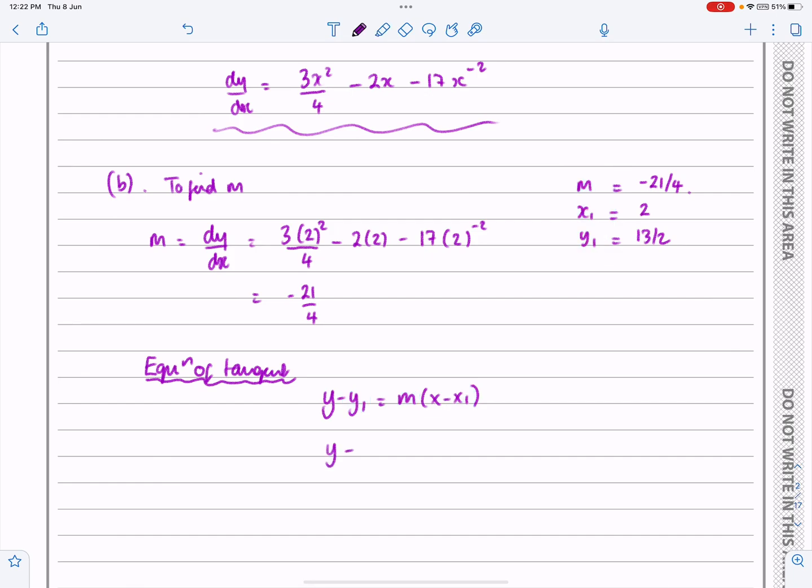So I'm going to get y - 13/2 is equal to m, which is -21/4, times (x - 2). Really useful to have it written down over there. It means you're less likely to make a mistake in actually just substituting values in here. In fact, because I've got the iPad, I'm actually going to bring that down and put that down there.